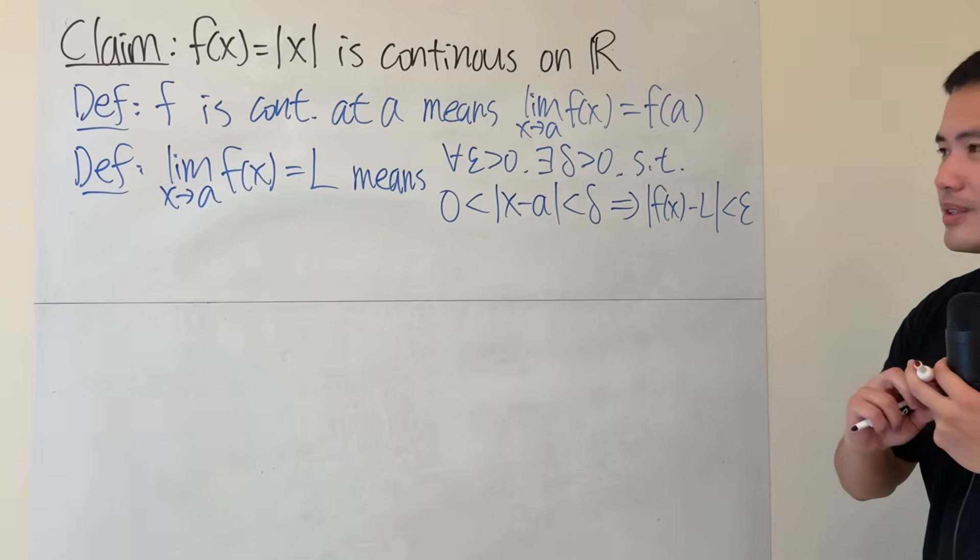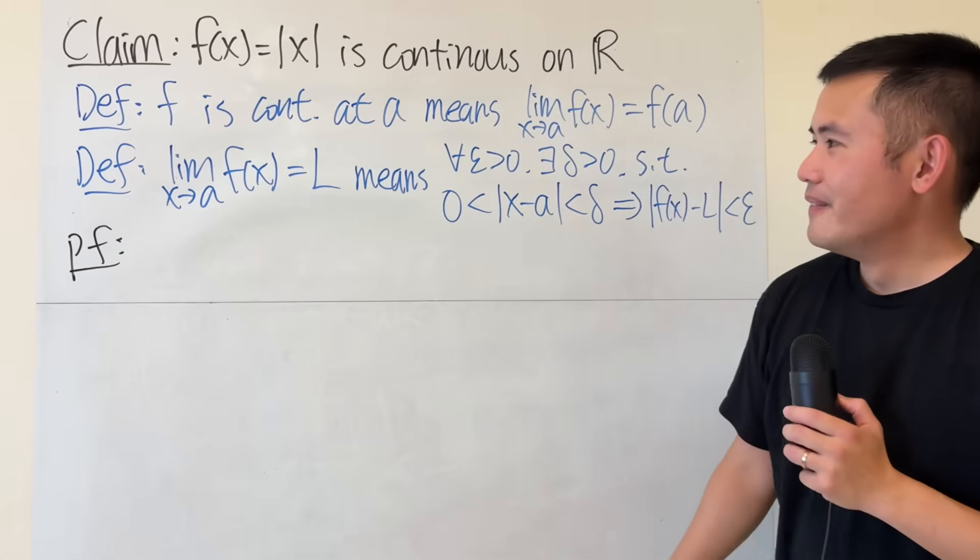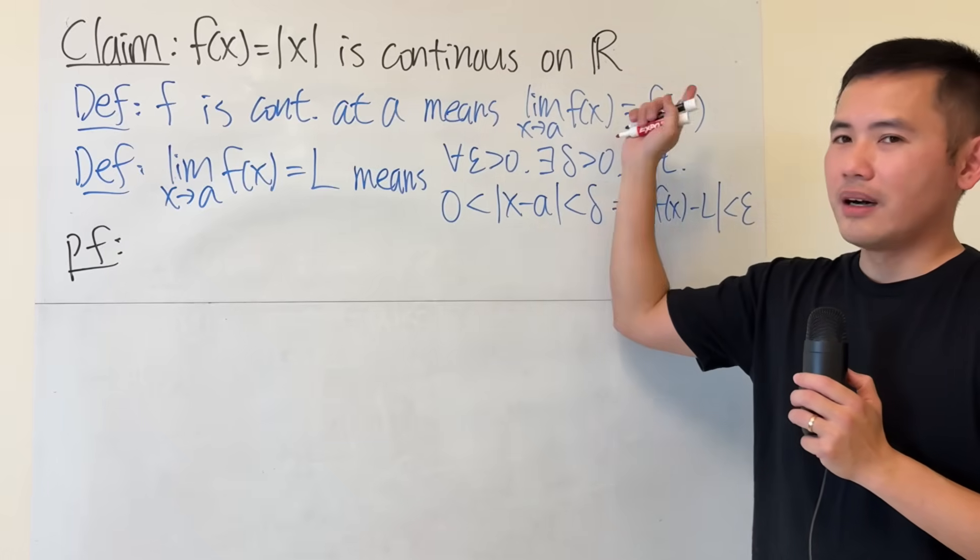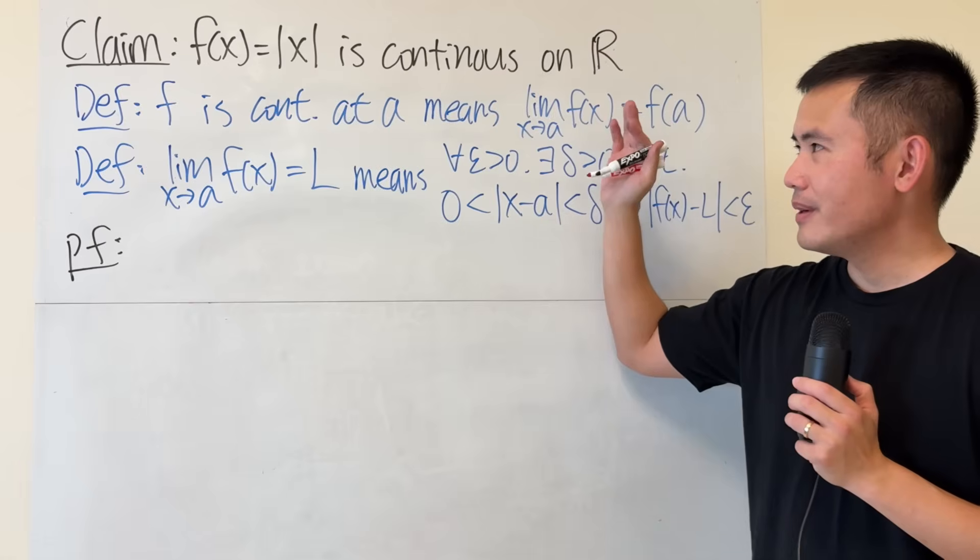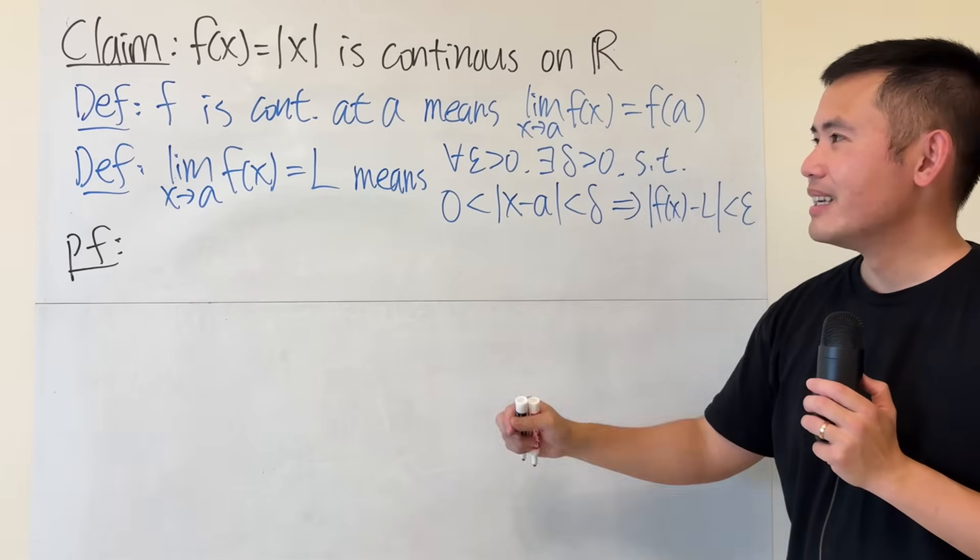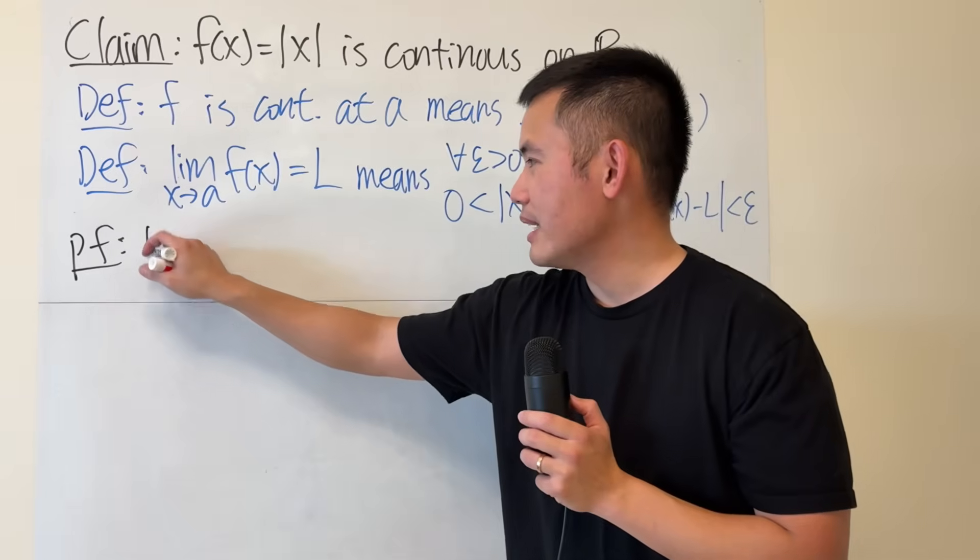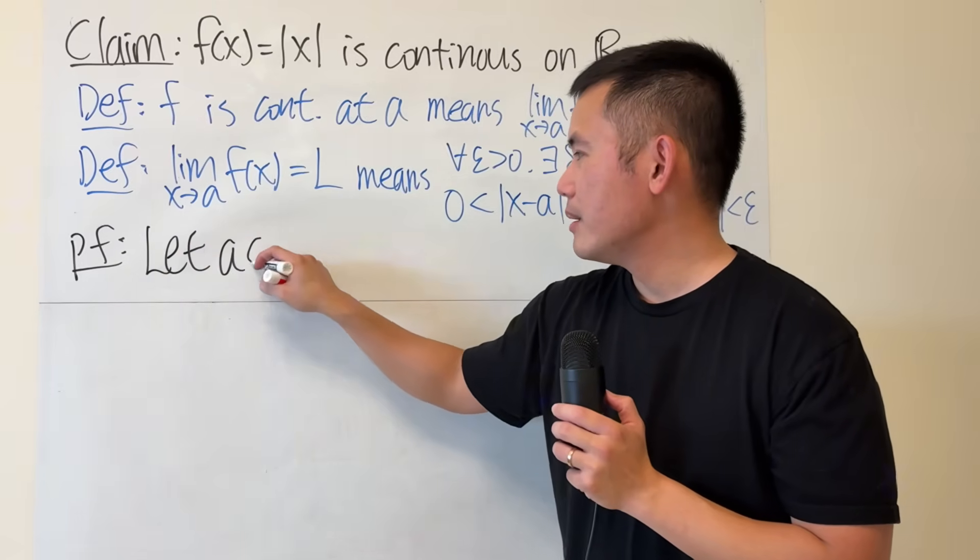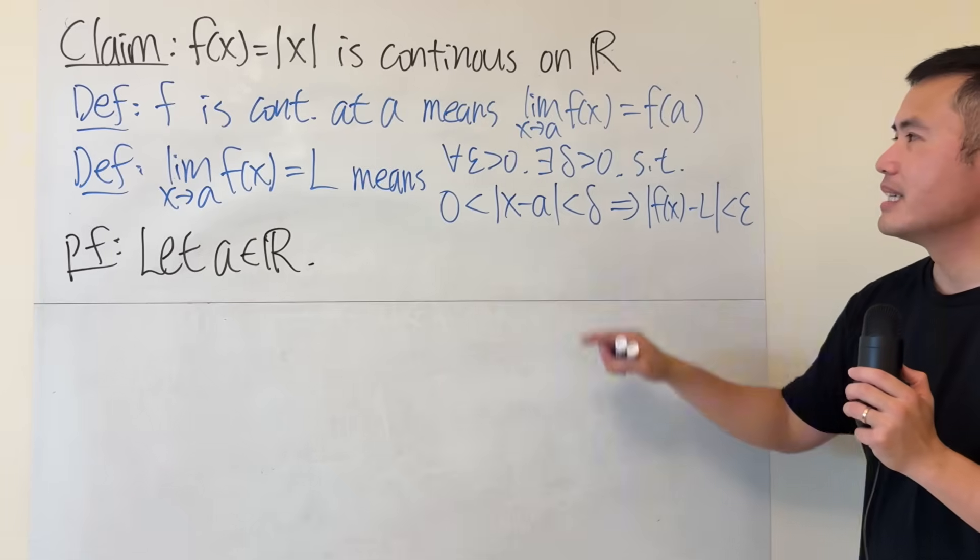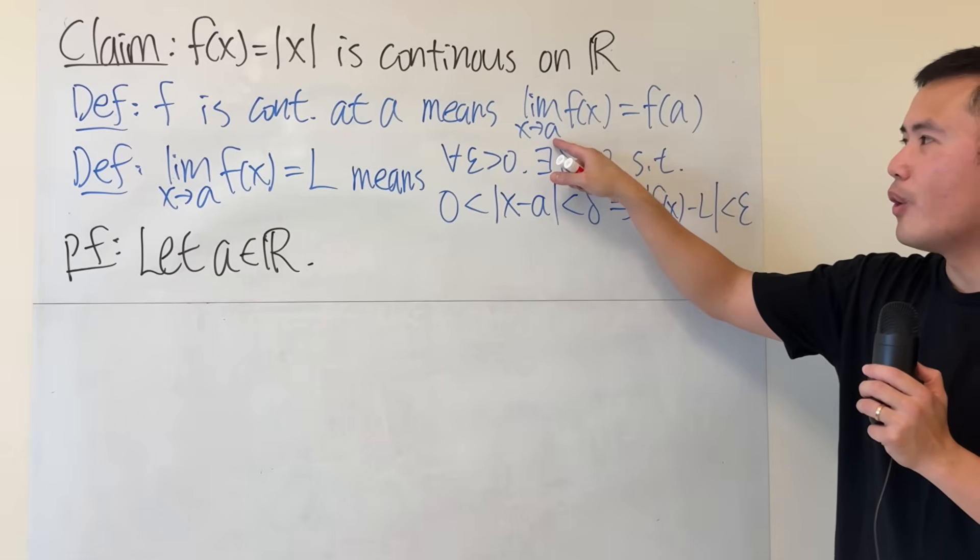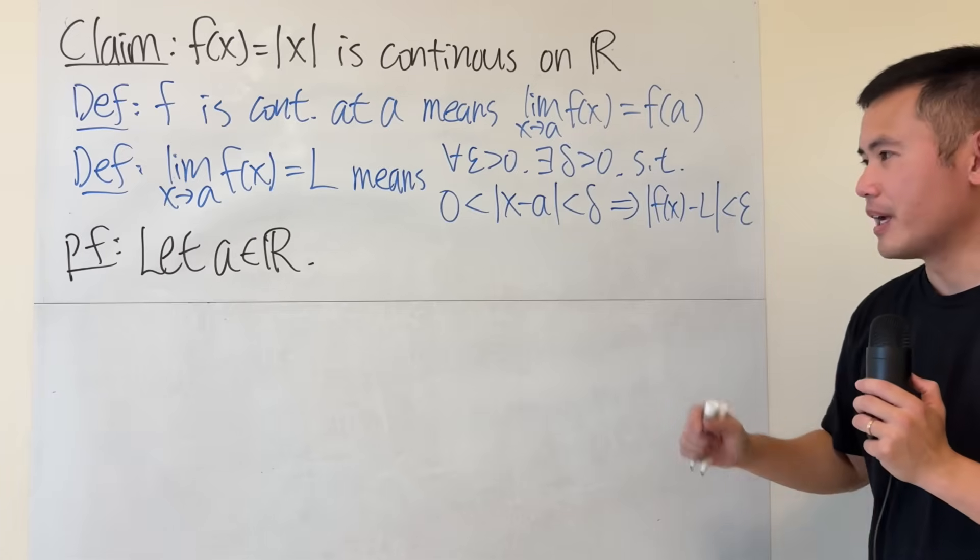Now, this is how we are going to start off with the proof. You always write Pf at first. To show this is continuous on R means any value in a set of real numbers. We have to make sure a is just any real number first. So I'm going to begin by saying let a be a real number. And I will show that the function is continuous at all real numbers. And we'll be done.